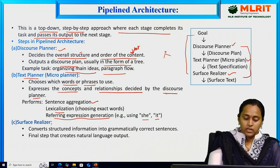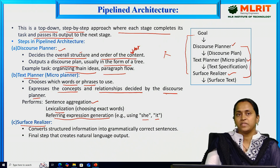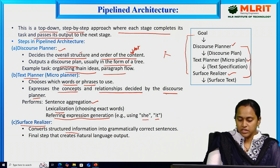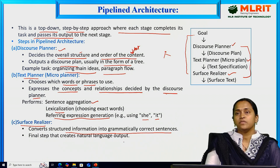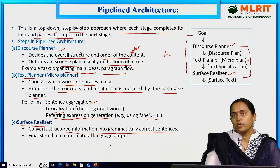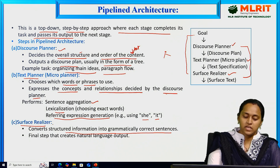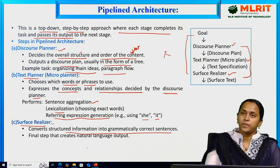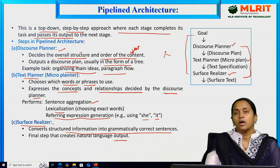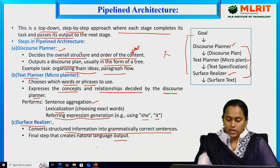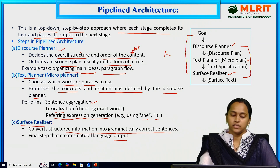The third stage is the surface realizer. It converts the structured information into grammatically correct sentences. For example, if we write a paragraph and make some mistakes, the surface realizer converts that information into grammatically correct sentences with proper meaning. It is the final step of the pipeline, and from it we obtain the natural language text as output.